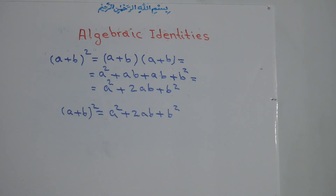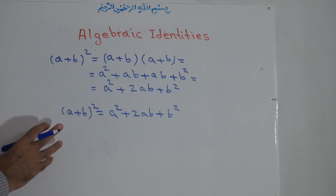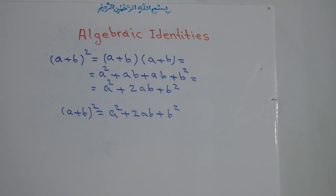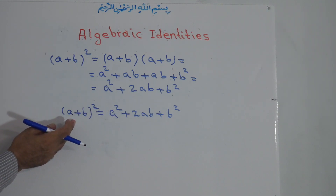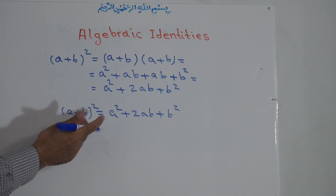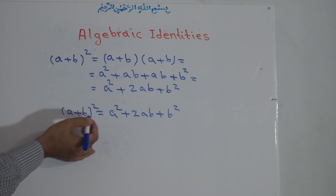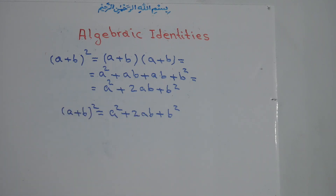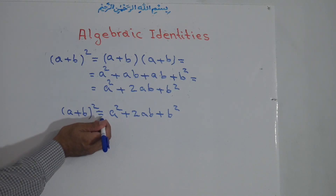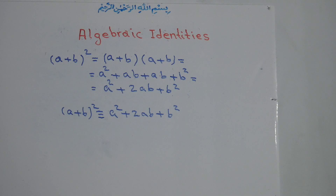This is one of the identities. Whenever you see a two-term expression — term 1 plus term 2 — all to the power of 2, we can use this formula and solve the problem without multiplying them out. Both sides look different but they are equal. If you plug in any number for a or b, the left side equals the right side. Sometimes we write a triple-equals sign for identities.